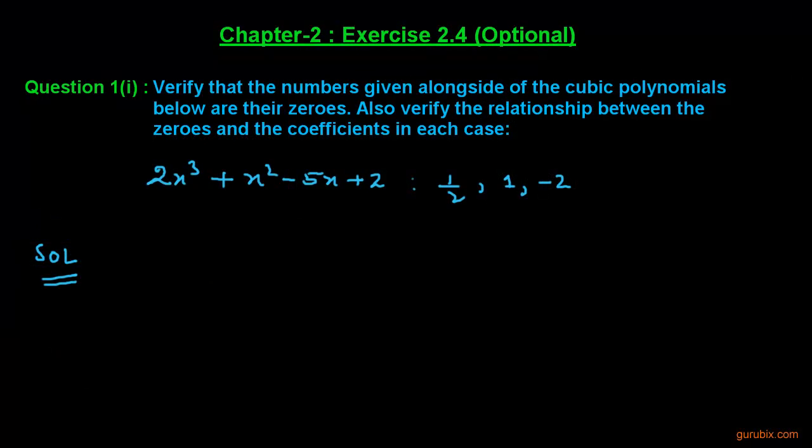Welcome. Here is the first part of question number one of exercise 2.4 of chapter two. The question is: verify that the numbers given alongside the cubic polynomials below are their zeros, and also verify the relationship between the zeros and the coefficients in each case.